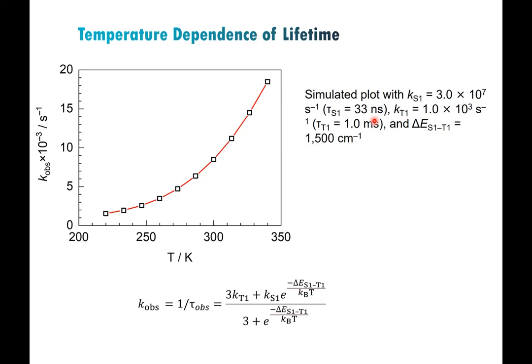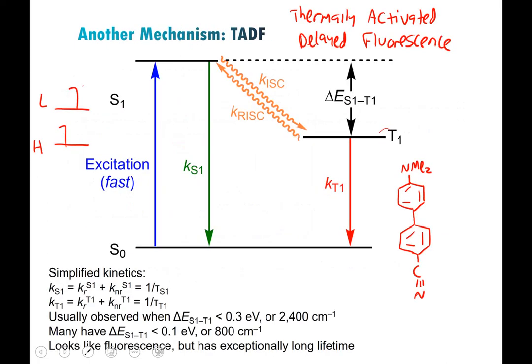If you observe an emission spectrum that looks like fluorescence but has a super long lifetime — microseconds or longer — that usually means TADF is occurring. Temperature-dependent lifetime measurements allow you to extract the inherent rate constants for T1 and S1 states and the energy gap between them. TADF is also important as background for OLEDs: TADF materials are called third-generation OLED materials because they can harvest triplet excitons and emit from S1, achieving 100% exciton harvesting and very high efficiencies.